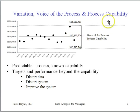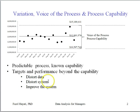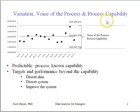Sometimes a demand is made that is beyond the capability of the current process — perhaps a monthly revenue of $20 million. This is beyond the capability of the current process. There are three ways you can achieve that value: either by distorting the data, by distorting the system and trying to reach that number no matter the cost, or by improving the system.